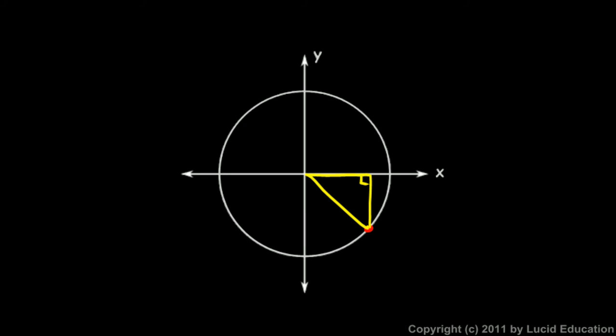I could still draw a line straight to the x-axis and make a right triangle with the base of it sitting on the x-axis and the terminal side as the hypotenuse.